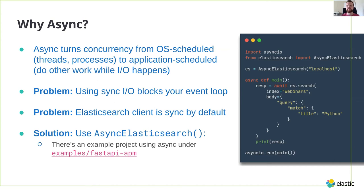People want to use Elasticsearch from FastAPI, Starlette, and the new Django 3.1 with async support — that's a really growing section of the Python community and we really wanted to support them well. The AsyncElasticsearch has the exact same APIs; the only difference is you'll have to call it with await. It returns native coroutines so they can be canceled or scheduled as a group. There's also a full example using FastAPI and APM on the actual project's GitHub repo.